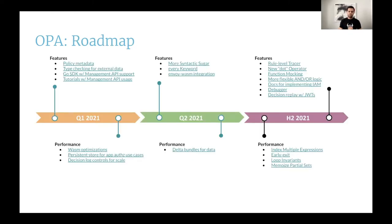Now let's look at OPA's roadmap. We released this roadmap that highlights some of the work being done by the OPA community this year. One of the things we'd like to do is update the docs to provide examples of the bundle, status, and decision logging management APIs to enrich the user experience. Optimizing support for Wasm compiled policies is something actively being worked on right now. There's also work around improving static type checking by extending the OPA eval command to accept a JSON schema file for the input document, in order to get precise errors while you author your Rego policies, thereby improving developer experience and productivity.